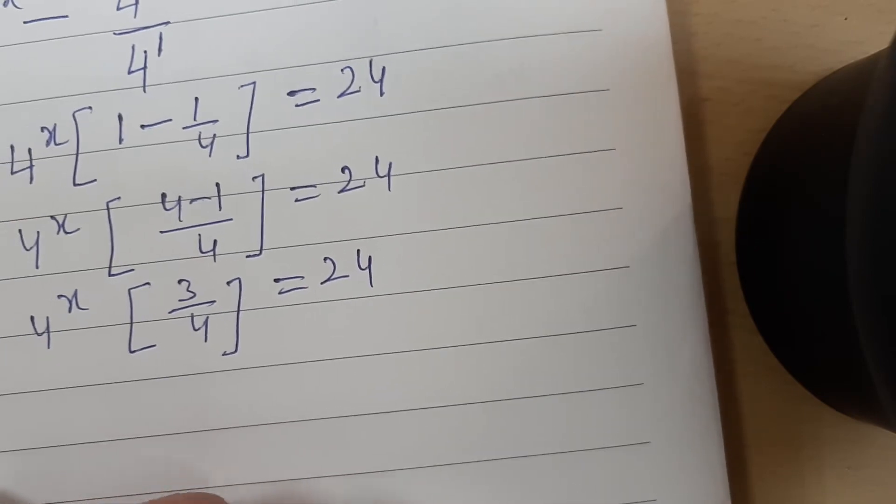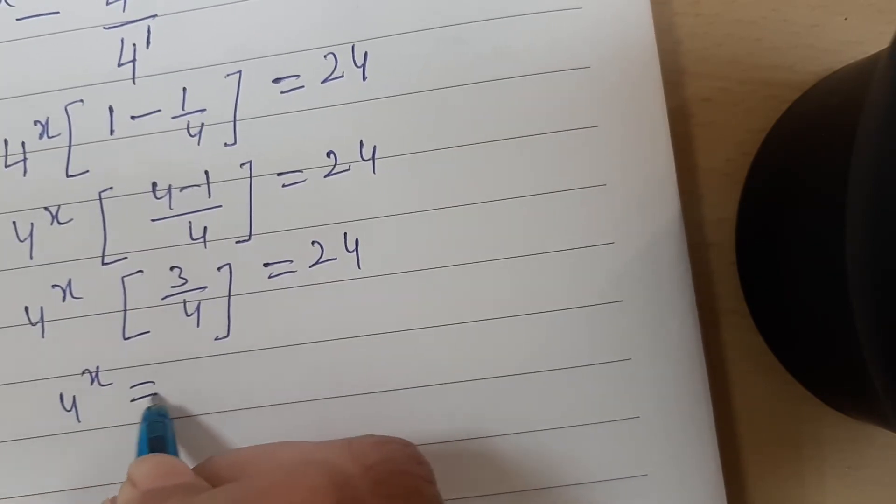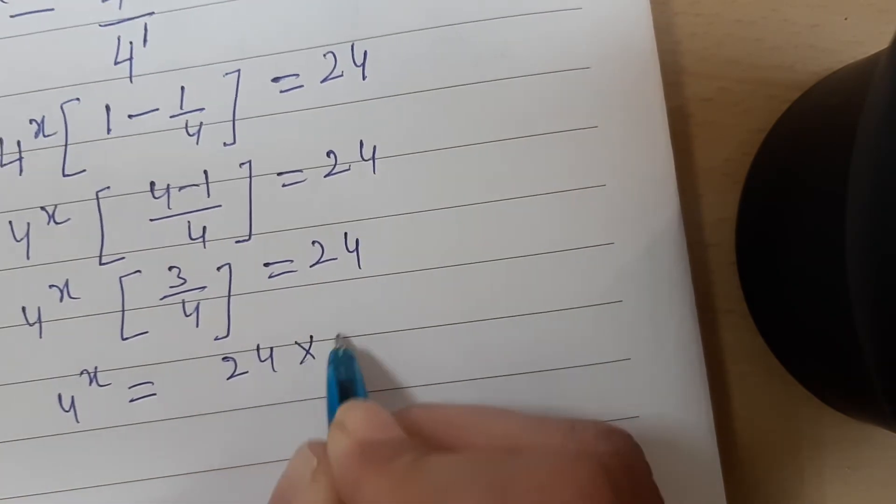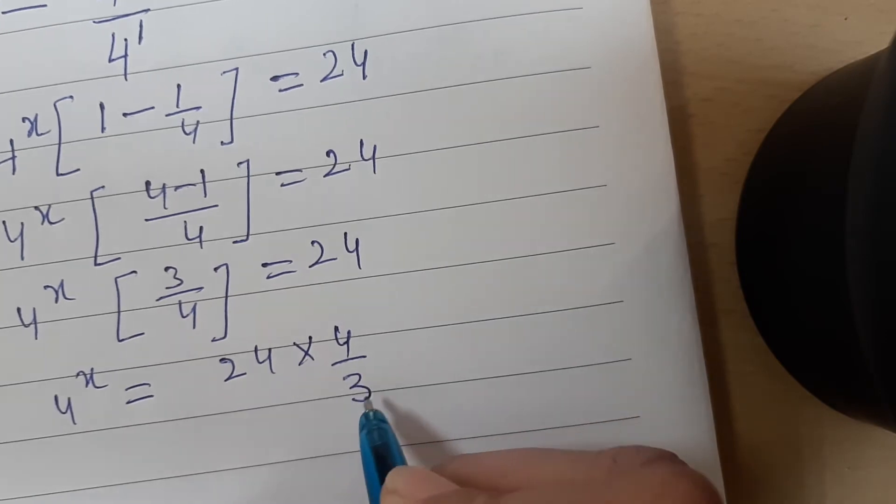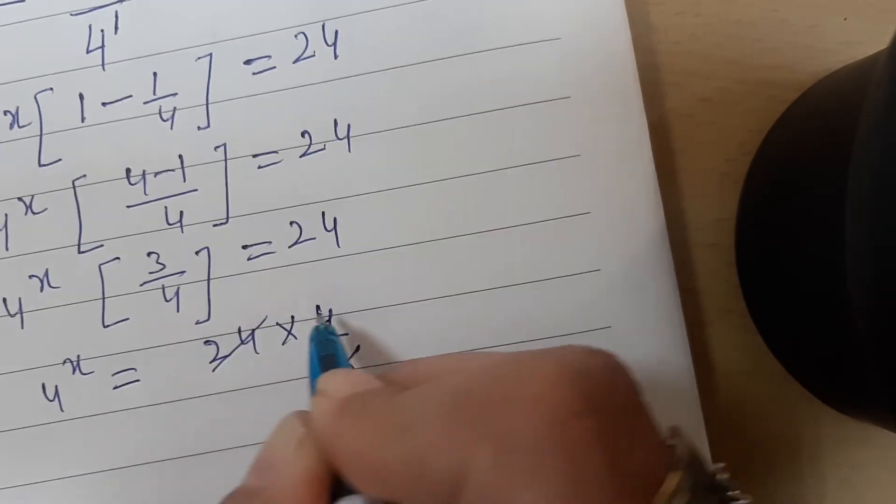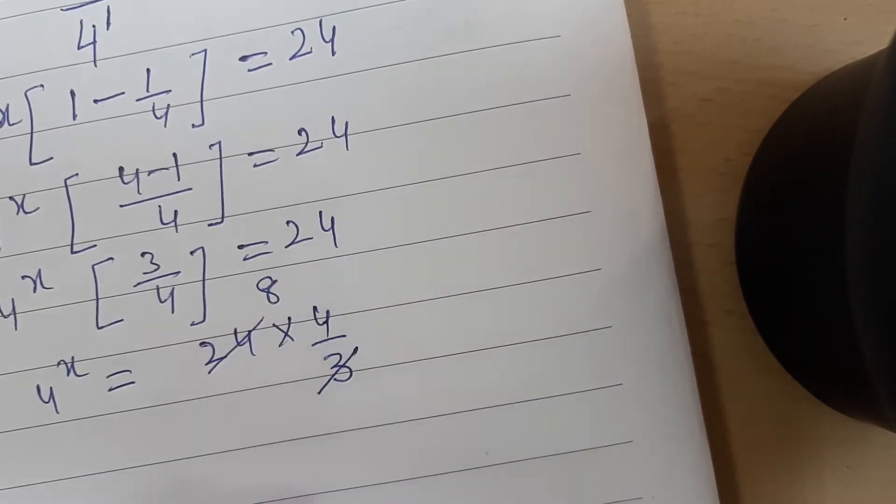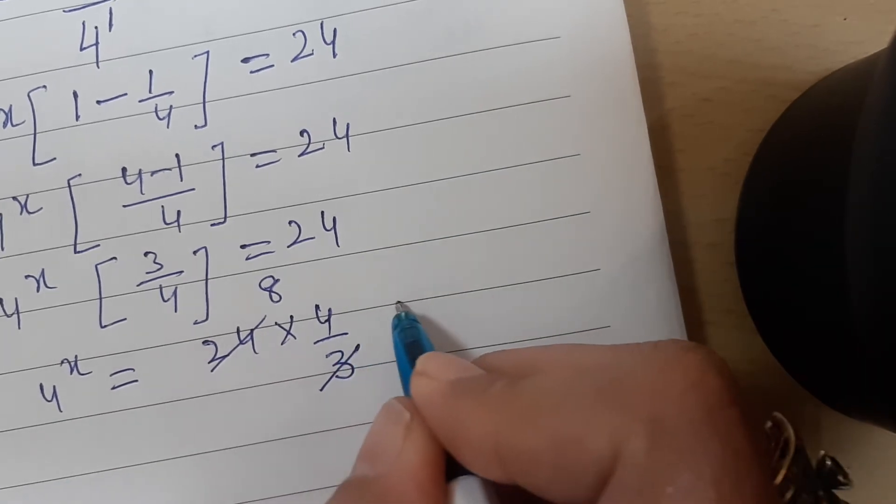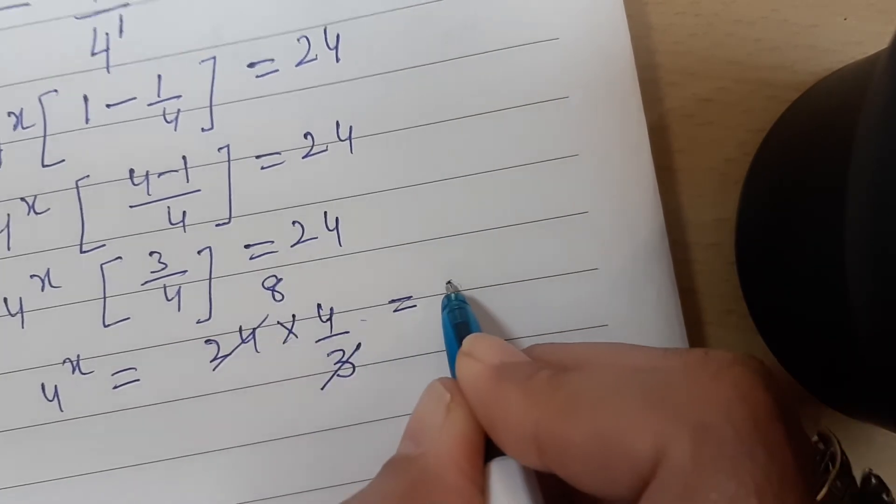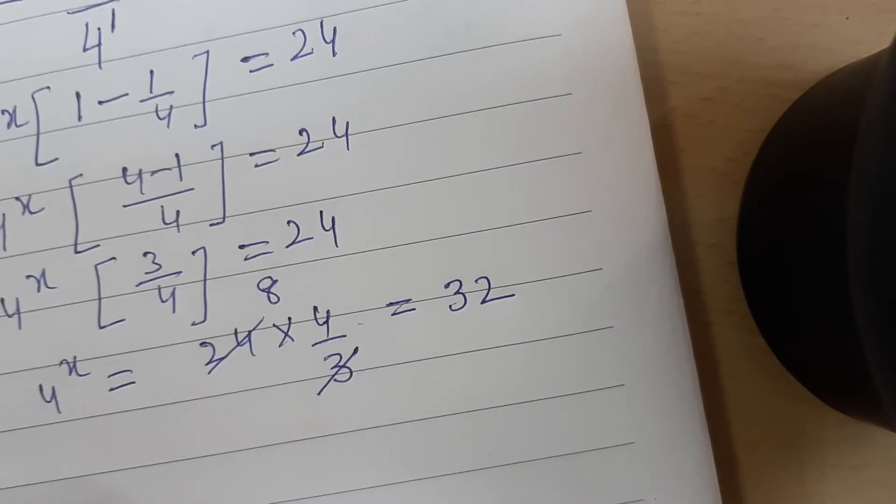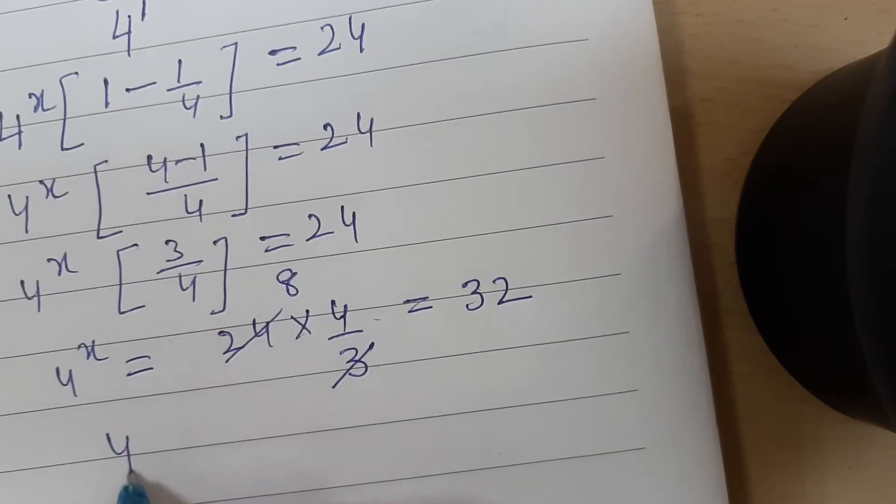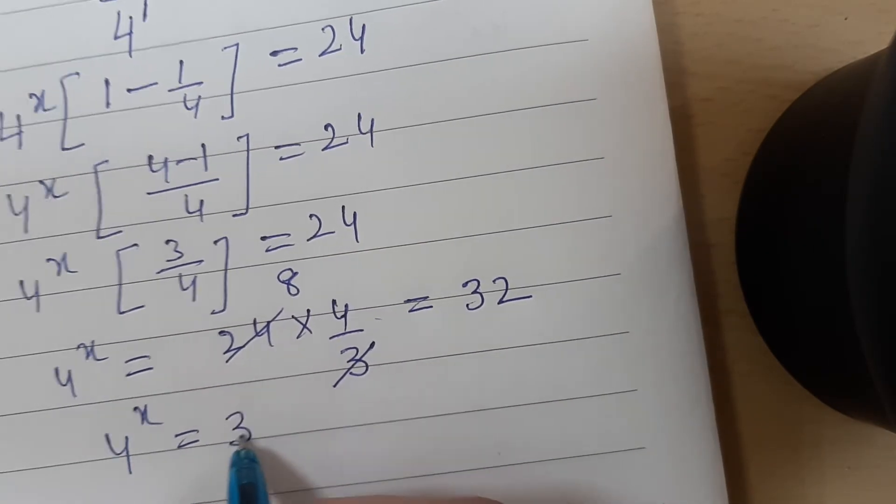Now this implies 4 to the power x is equal to 24 times 4 by 3. Now you simplify this. 3 eights are 24, 8 fours are 32. So this implies 4 raised to the power x is equal to 32.